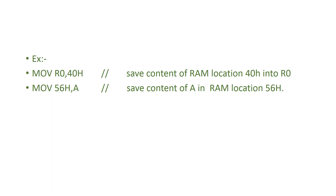In direct addressing, one operand is the immediate address. The data is stored at a RAM location. For example, the instruction 'MOV 56H, A' moves the content of the accumulator to the RAM address 56H. The data in R0 is moved to that location. This is a direct addressing mode example.